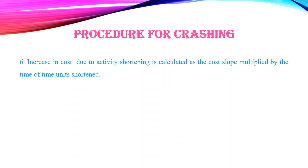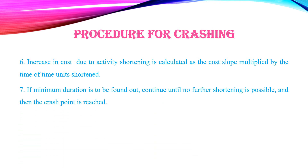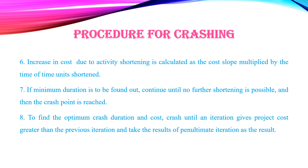Step 6 — The increase in cost due to activity shortening is calculated as cost slope multiplied by the number of time units shortened. To find the minimum duration, continue until no further shortening is possible and the crash point is reached. To find the optimum crash duration and cost, crash until an iteration gives project costs greater than the previous iteration, then take the results of the penultimate iteration.